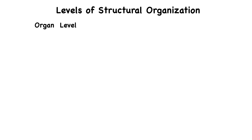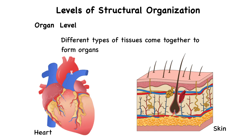At the organ level, different types of tissues come together to form organs. An organ must contain at least two types of tissues, but most have all four. These tissues work in harmony to carry out complex tasks. Examples include the heart, which pumps blood through coordinated muscle contractions lined with epithelial tissue and supported by connective and nervous tissue. The skin, which is your largest organ, also protects, senses, and helps regulate body temperature through layers of epithelial, connective, muscle, and nervous tissues.